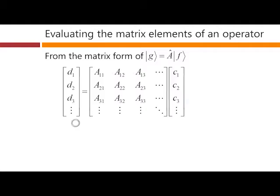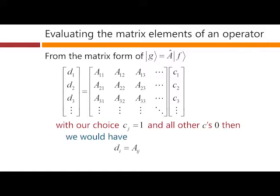So from the matrix form of this bracket version g equals A operating on f, then we know that our matrix form looks like this. And with our choice cj equals one and all the other c zero, then we're going to have that di is equal to aij. Let me illustrate that just by example.